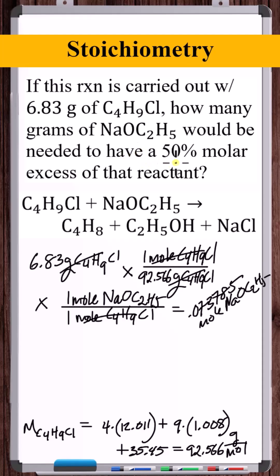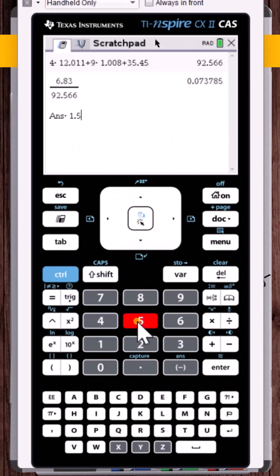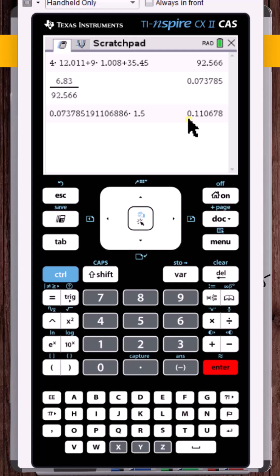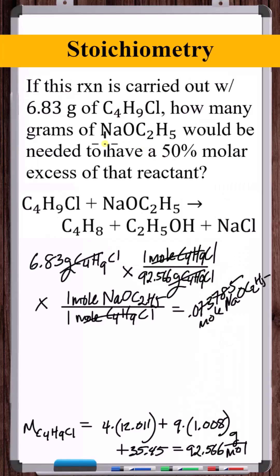But we're looking for a 50% molar excess of this, so let's add 50% to this. Multiply it by 1.5. That's how many moles with a 50% excess of NaOC2H5 that will react with 6.83 grams of C4H9Cl.